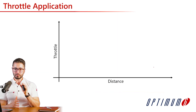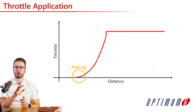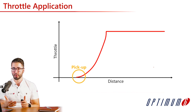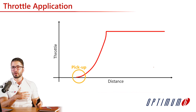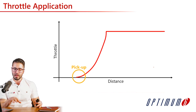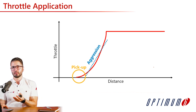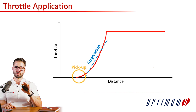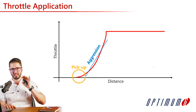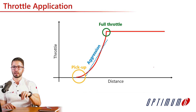For throttle application, we look at the pickup point — where the driver goes back on the throttle — which is very important not only because it influences car balance, but also because it changes the differential behavior. Where the driver engages the throttle really influences the balance felt from the apex to the exit. The second parameter is aggression: how quickly the driver goes back on the throttle. The third is when the driver gets to full throttle, which really defines how much speed they'll get at corner exit.